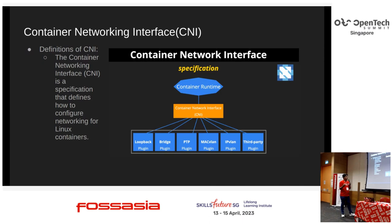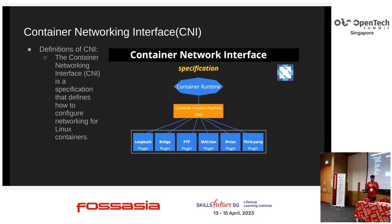The textbook definition given by the Cloud Native Computing Foundation about CNI is that it is a specification that defines how to configure networking for Linux containers. It does that by providing a set of APIs for networking solutions to integrate with different container runtimes. If you take a look at the picture here, there is a container runtime of your choice, and then CNI sits on top of it, and within CNI it ships lots of components called plugins.